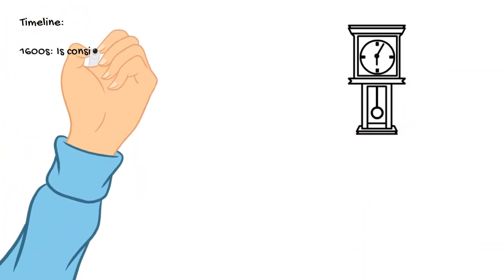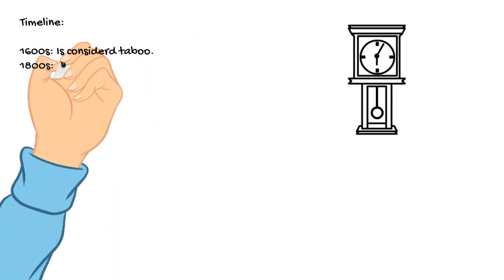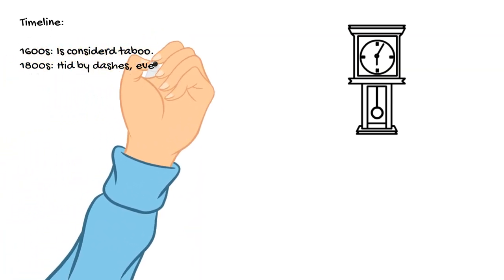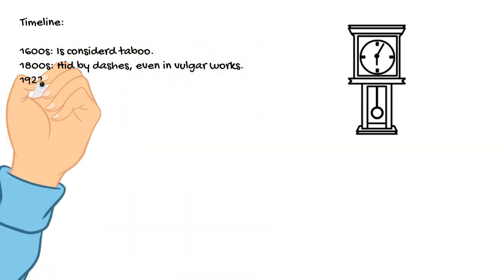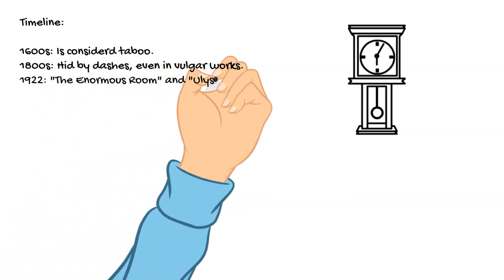Starting sometime in the 1600s, the word became seen as taboo, so much so that not even Shakespeare used the word. By the 1800s, the word had solidly found its place in vulgar publications and was disguised by dashes, much like we do with asterisks today.